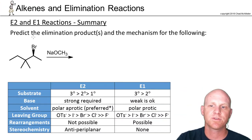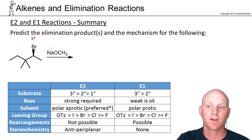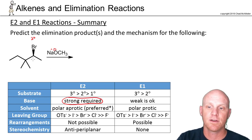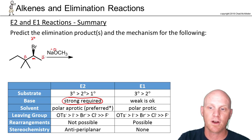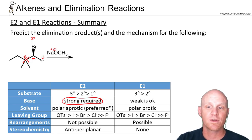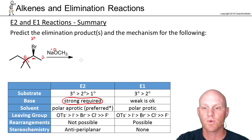In this elimination reaction, we have a secondary halide — that tells us nothing on its own. Again, the biggest distinguishing factor is the base. Sodium is a metal, oxygen is a non-metal — ionic bond — giving us a negatively charged oxygen, which is a strong base. Therefore, we're probably doing E2. There's the leaving group and alpha carbon; one beta carbon has hydrogens and one does not, so we only form the alkene in one location.